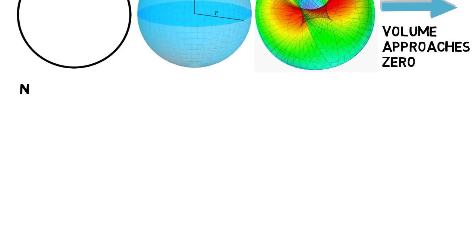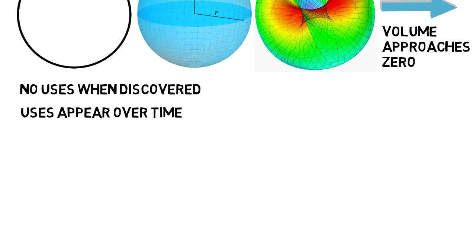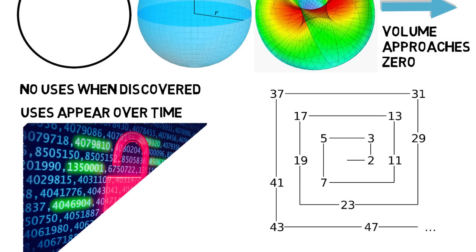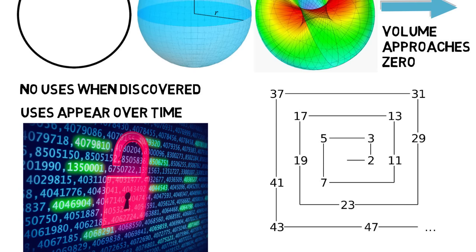Often pure math topics have no real uses when they are discovered, but then uses appear over time. Prime numbers have been researched for thousands of years, and for most of that time they were fairly pointless. But now prime numbers are used in computer encryption systems to secure information. So when you put in your credit card online, you can thank the development of prime numbers and number theory for having that information more secure.